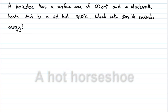In this PhysCast, a horseshoe has a surface area of 50 square centimeters and a blacksmith heats this horseshoe to a red-hot 810 degrees Celsius. What rate does the horseshoe radiate energy?